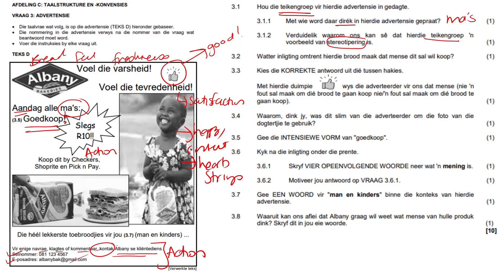Watter inligting omtrent hierdie brood maak dit dat mense dit wil koop? So what information about this bread makes people want to buy it? There's quite a lot — they use the word farset, tevredenheid, but most importantly, dis goedkoop, slegs tien rand. I think that's the information about the bread that makes me want to buy it. It's fresh and it's very cheap. But they only want one answer, so you can choose.